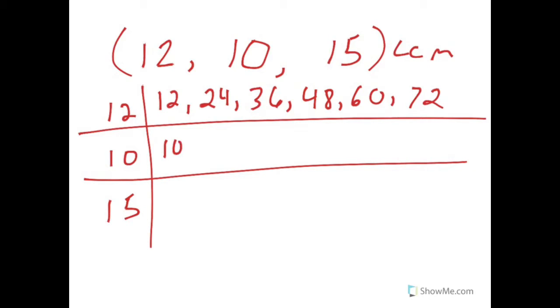Multiples of ten. Ten. Twenty. Forty. Fifty. Sixty. I'm going to stop there. I'm not done. I see that both twelve and ten have sixty in common as a multiple, but that doesn't necessarily mean that fifteen is going to work out that way. Let's see.